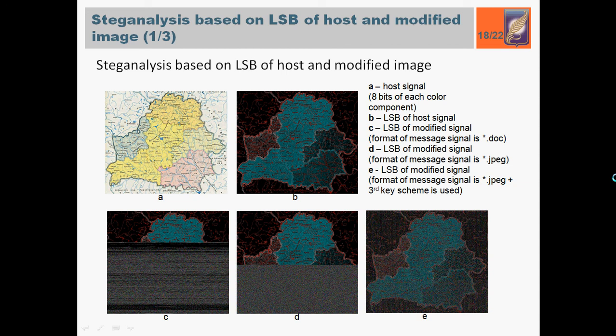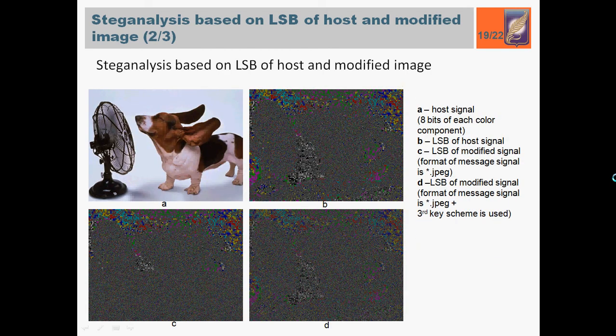On this slide, it's shown that for some classes of images, like photo or scan images, the detection of compressed messages is rather complicated. But in comparison with empty container on picture B, the selection of message in modified container on picture C can be detected. Using absurd key schemes makes detection impossible.